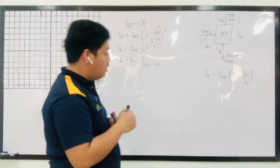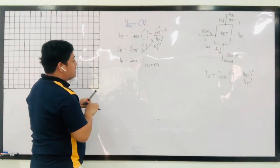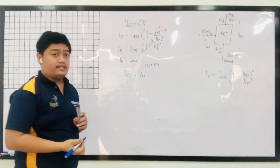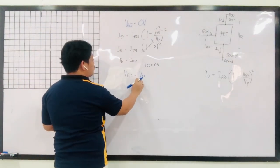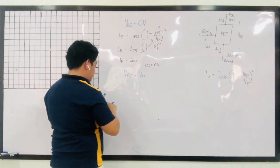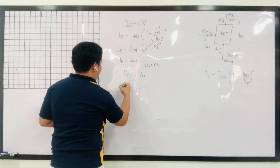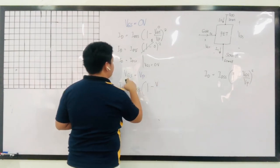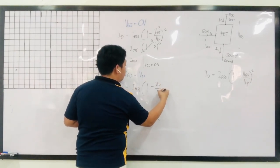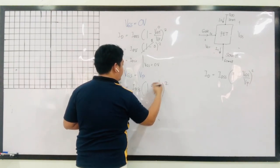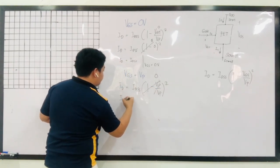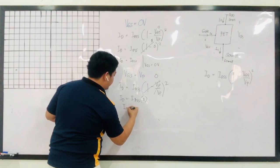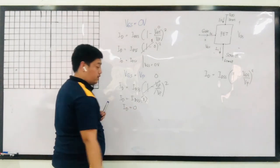Case two: what if VGS is equal to your pinch-off voltage VP? Substituting VP for VGS, you have ID is equal to IDSS times 1 minus VP over VP, all squared. VP over VP is 1, so 1 minus 1 equals 0, squared equals 0. Therefore ID is equal to IDSS times 0, so your ID is equal to 0.